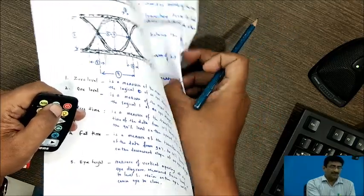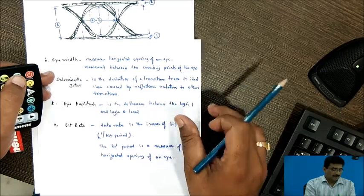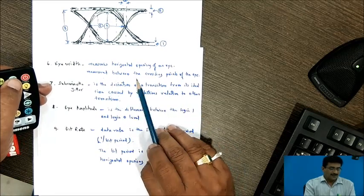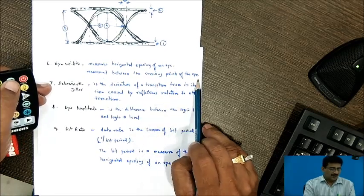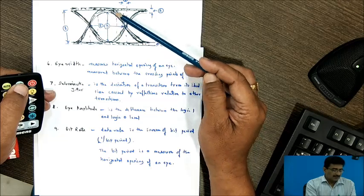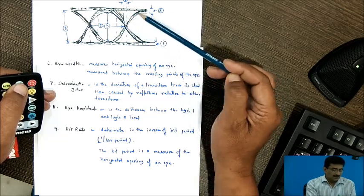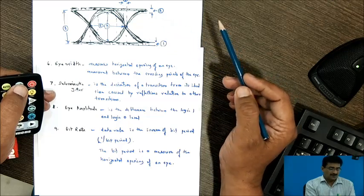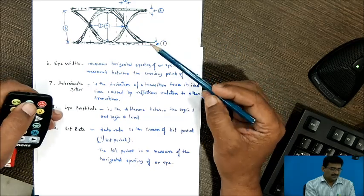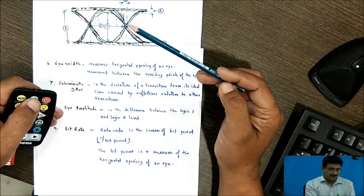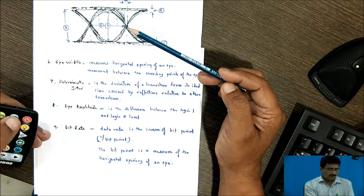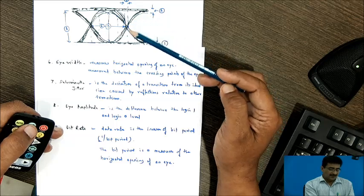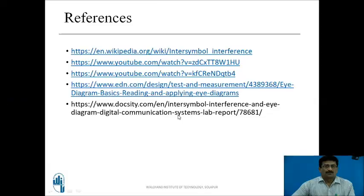Now, there are some other properties. This is eye width measures horizontal opening of an eye measured between crossing points of the eye. Then deterministic jitter is the deviation of a transition from ideal time caused by reflection relative to other transitions. I-amplitude is the difference between the logic 1 and logic 0 level. Bit rate, data rate is inverse of bit period. It is 1 upon bit period.